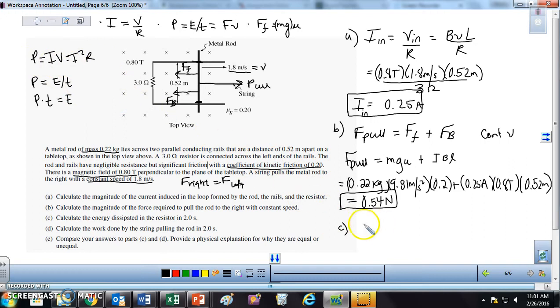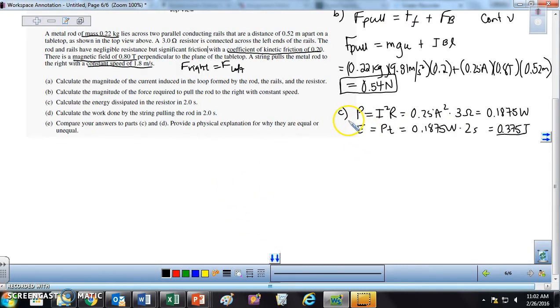So it doesn't matter which of these I use. In fact, I'll use I squared R. So my power is going to be I squared R. I squared is 0.25 amps squared times R. When I do that, I get 0.1875 watts. And then for my energy, it's going to be power times time. So 0.1875 watts times 2 seconds, I get 0.375, and this will be in joules since it's energy. So that's part C. So I found my energy electrical.